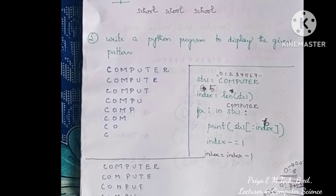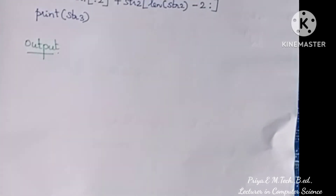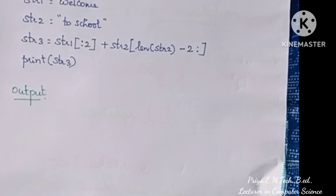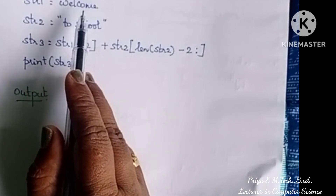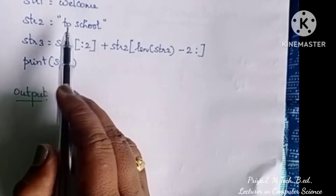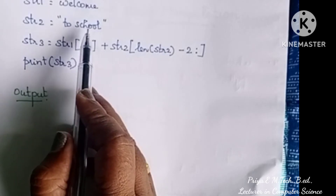Every time I am explaining the logic of each particular program. On the next program — this is also about slicing. What will be the output of the given Python program? This is a very simple Python program. Easily you can get 3 marks without much effort. str1 is equal to 'welcome'.